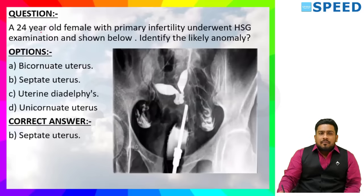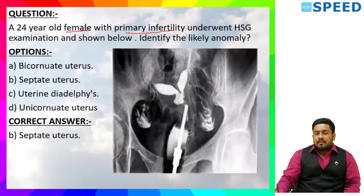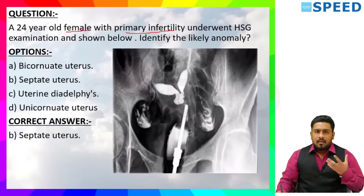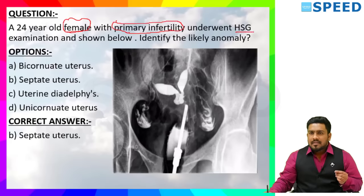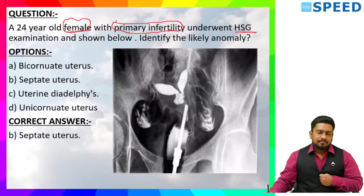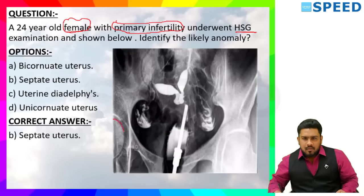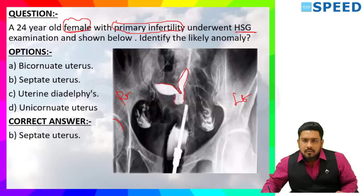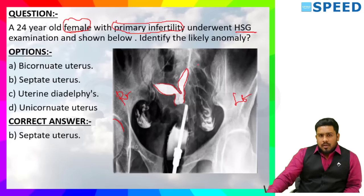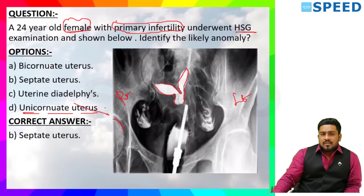Next question: A 24-year-old female with primary infertility underwent HSG (Hysterosalpingo-Graphy) examination. Identify the likely anomaly. When seeing this image I am able to appreciate the proximal femur part, the pelvis bone — right pelvis, left pelvis — and here I am able to see the two cornua of the uterus.